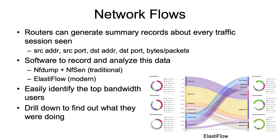Network flows: routers can generate a summary of records about every traffic session seen, including source address and port, destination address and port, bytes, and packets. You can track sessions users have actively running, see who is using the most bandwidth and what they're using it for. You don't see the actual content of packets — that's called deep packet inspection — but you see the general type of packets in use. Software for this includes NF-dump with NF-SEN for traditional NetFlows, and more modern open source software includes Elastiflow.